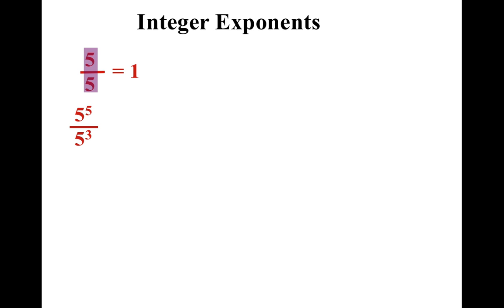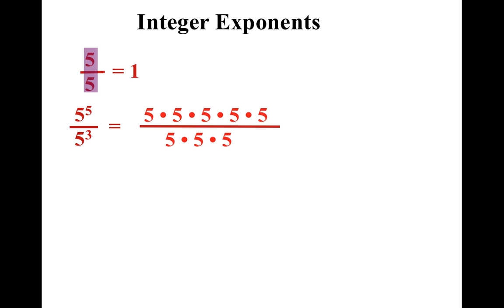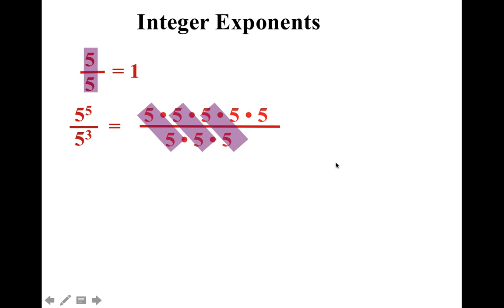So how can that help us solve integer exponents? We learned with division of exponents that if we want to divide, all we have to do is write out the problem. Notice 3 of the 5s simplify, which leaves us two 5s left over in the numerator. And that's why 5 to the 5th divided by 5 to the 3rd ends up being 5 to the 2nd, or 25. And we learned that 5 minus 3 is 2, and that's why it works.